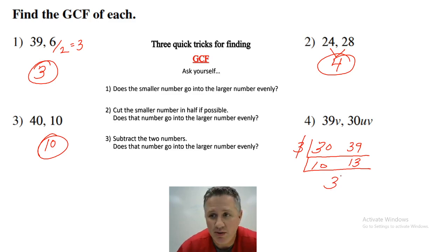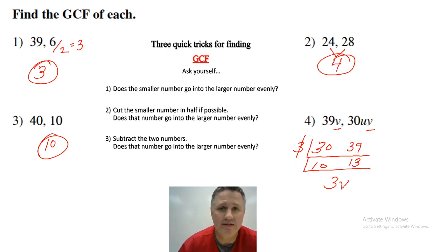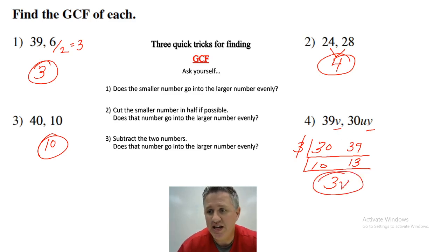Now let's look at the variables. Do they have a V in common? Yes, they do. Do they have a U in common? No. So the GCF would be 3V.